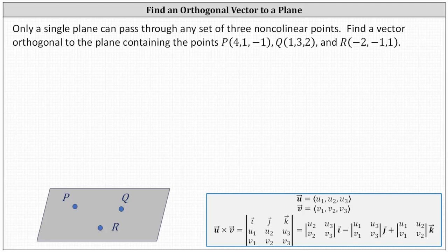We can use the three points to determine two vectors in the plane. For example, looking below, we can find vector PQ and vector PR in the plane. Next, if we determine the cross product of the two vectors, we can determine a vector orthogonal to the two vectors, which will also be orthogonal to the plane.